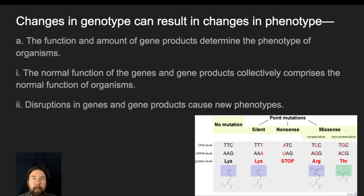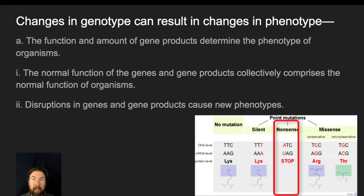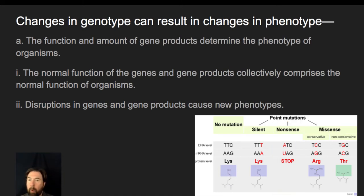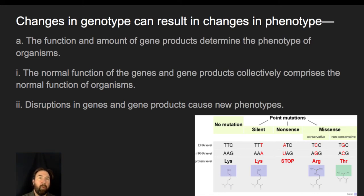Changes in the genotype can result in changes in phenotype. The function and the amount of a gene's products determines the phenotype of the organism. So if we have a mutation and it suddenly becomes a nonsense mutation and we stop making that protein, that's going to have an impact. Depending on what the phenotype is and the environmental conditions, it's going to have a vastly different impact on different types of organisms. The normal function of the gene and gene products collectively comprises the normal function of the organism.